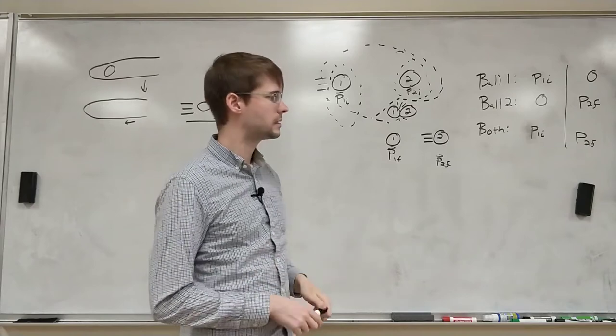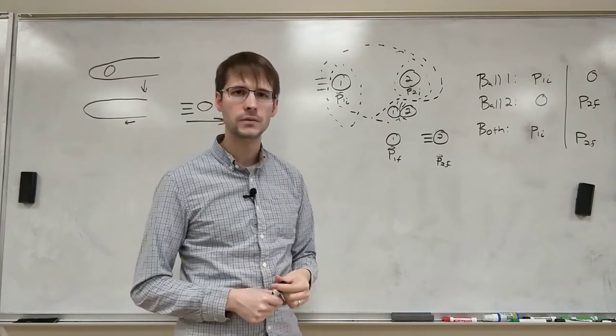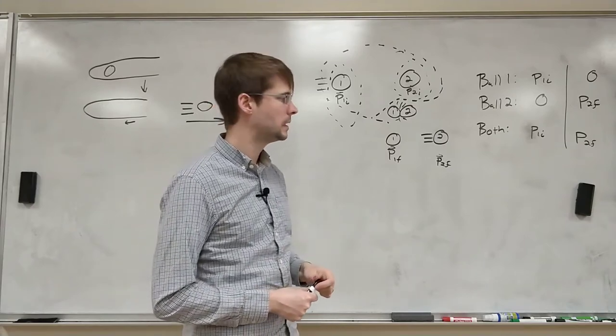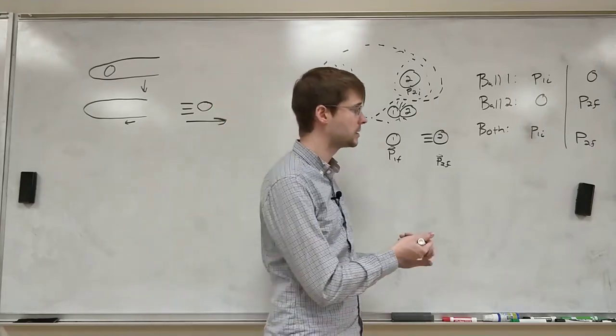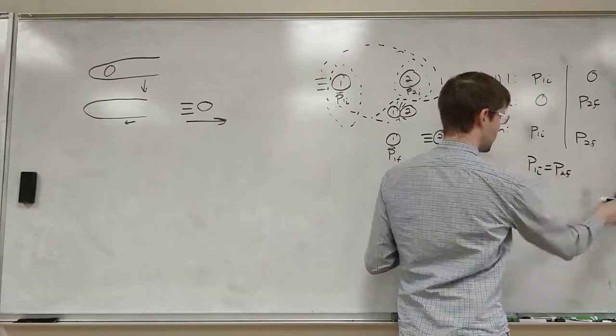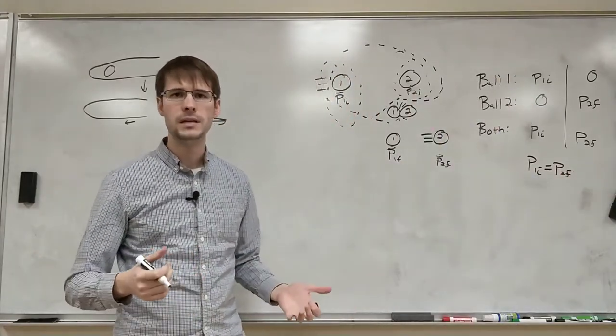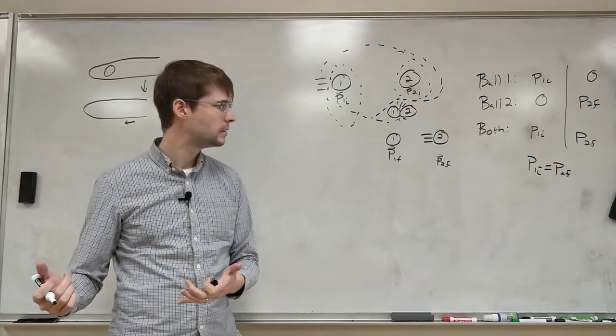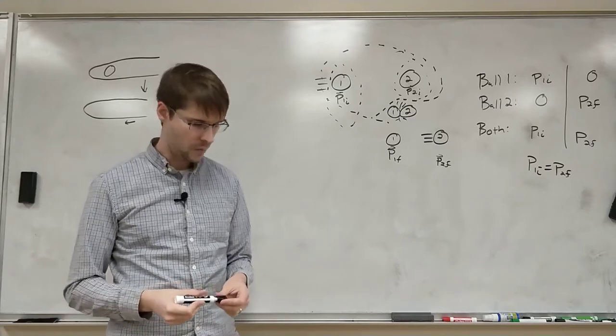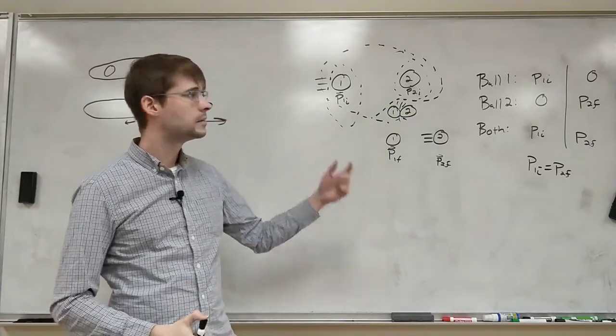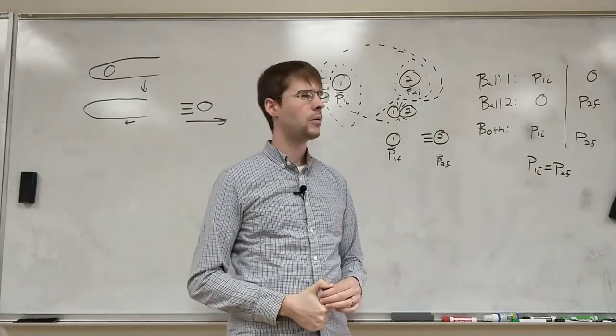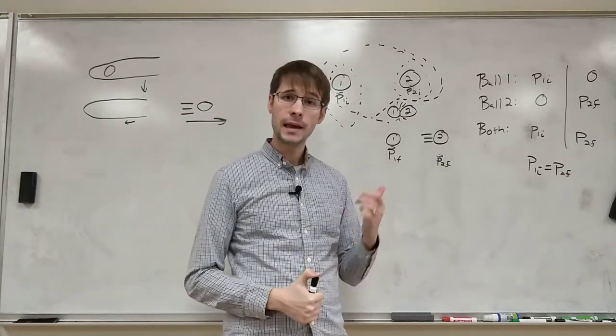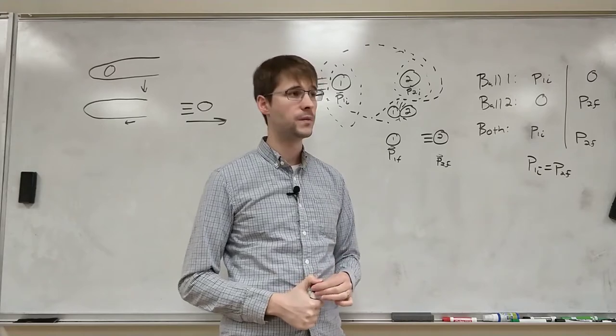And I'm saying that for this statement. That sort of is our statement of conservation of momentum. That the initial momentum is going to be equal to the final momentum. So in this case, we get that p1 initial is equal to p2 final. And that the momentum of these objects are conserved, of the whole system.